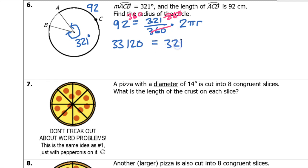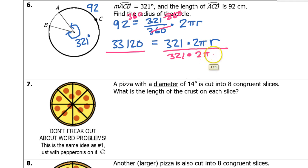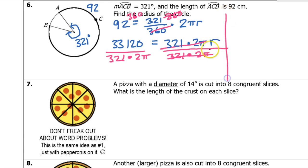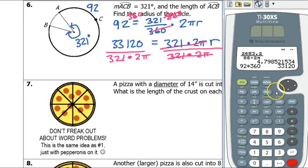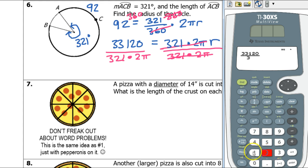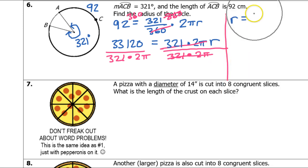That's equal to 321 times 2πr. I'm trying to get r by itself, so I can simply divide both sides by 321 times 2π. That way the 321 times 2π cancels itself out and leaves r by itself. So I'm ready to say what r is — I can just put all this in my calculator. So 33,120 over 321 times 2π gives 16.42, and the units are centimeters.